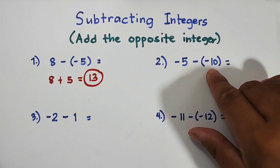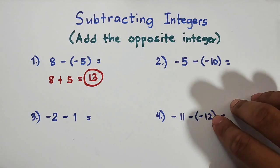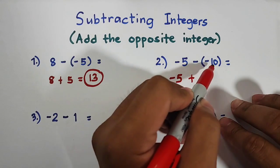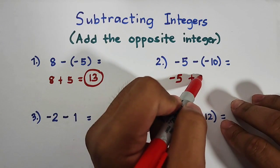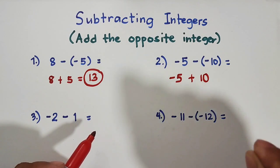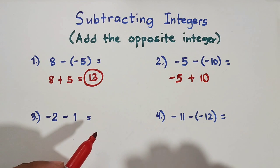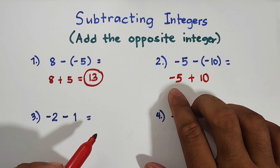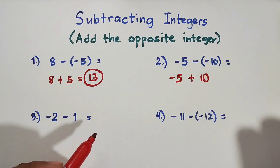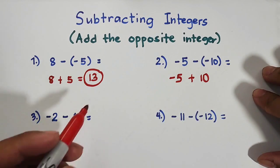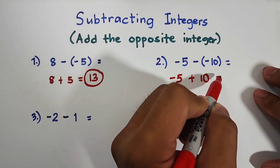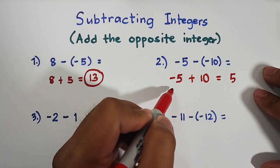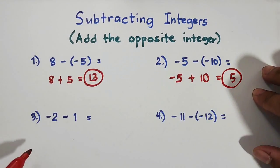In number two, we have negative 5 minus negative 10. Again, add the opposite integer — copy negative 5, then add the opposite of negative 10, which is positive 10. So we now have negative 5 plus 10. When adding integers we get the absolute values: 5 and 10. We subtract them because they have opposite signs, so it's 10 minus 5 equals 5. We copy the sign of 10 because 10 is greater, so the answer is positive 5.